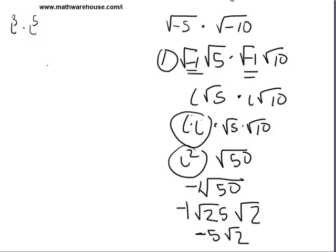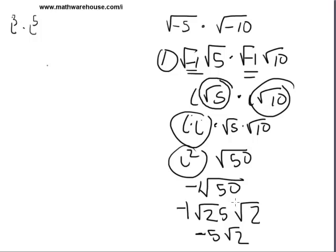Quick recap: when you are multiplying pure imaginary numbers — the square root of some negative number times the square root of some other negative number — step one is to take out the square root of negative one to make it i root five times i root ten. Then you have a multiplication expression with four terms. Multiply the i's together to get i squared, multiply the radicals together, and the last step is to check whether that final product can be simplified — square root of 50 could be.